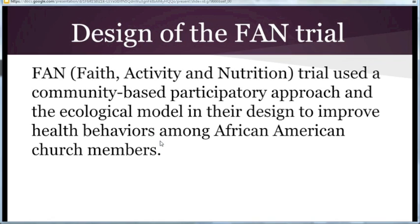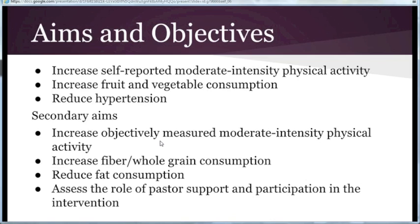The FAN trial used a community-based participatory approach and the ecological model for its design. Its main objectives were to increase self-reported moderate-intensity physical activity, increase fruit and vegetable consumption, and reduce hypertension. Secondary aims were to increase objectively measured moderate-intensity physical activity, increase fiber or whole grain consumption, reduce fat consumption, and assess the role of pastoral support and participation in the intervention.